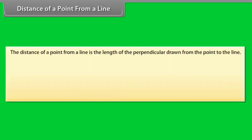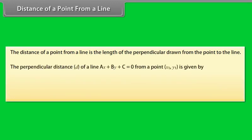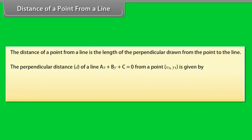Distance of a point from a line: The distance of a point from a line is the length of the perpendicular drawn from the point to the line. The perpendicular distance d of a line ax + by + c = 0 from a point (x₁, y₁) is given by d = |ax₁ + by₁ + c| / √(a² + b²).